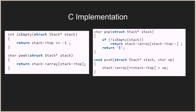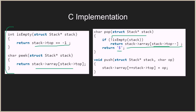We have four utility functions: 'isEmpty' checks if top equals minus one, meaning the stack is empty. 'Peek' returns the element at the top of the stack. 'Pop' checks if the stack is not empty, pops and returns the element; if the stack was empty it returns the dollar symbol indicating underflow. 'Push' pushes an element onto the stack.